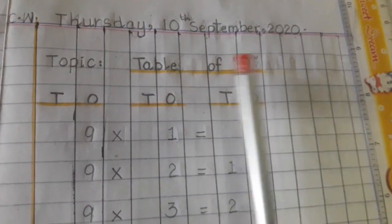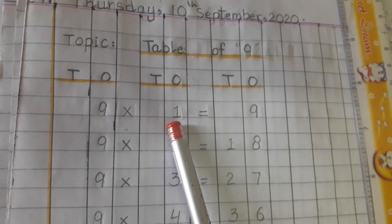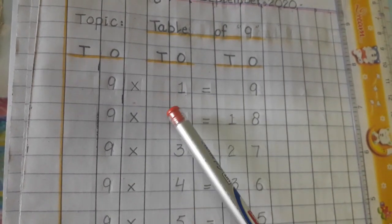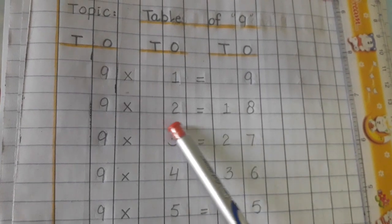So students, you always did mistake when you are writing the table. You did not write tens and ones. So when you want to write number ten, you write it into one digit, into one box only. That is not correct, okay?